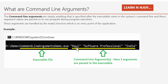The first argument is Ravi, the second argument is Software Professional, and the third one is India. So here I have mentioned three command line arguments passed to the executable. These arguments will be received by the main function of our application, which is the entry point of the application.